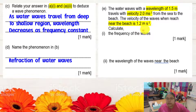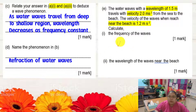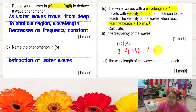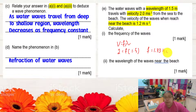We can only use the first situation — at the deep sea — to find frequency, because we are given both velocity and wavelength there. Using the formula v = fλ: v is 2 m/s and λ is 1.5 m, so frequency equals 2 divided by 1.5. The answer is 1.33 Hz. Give at least 2 decimal places — do not round to just 1 decimal.